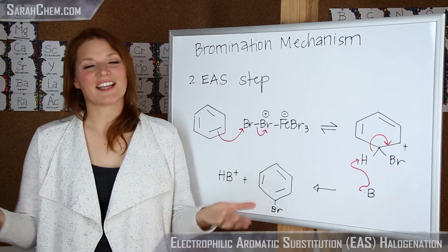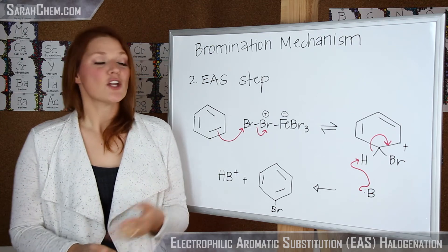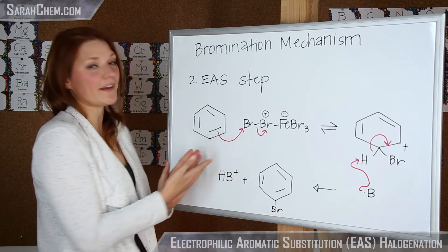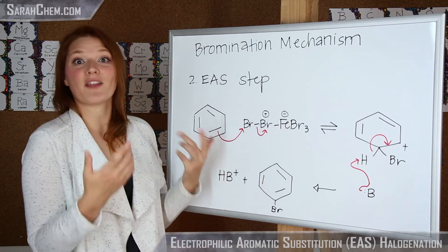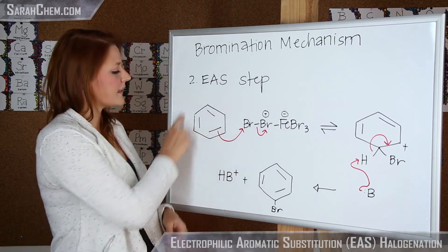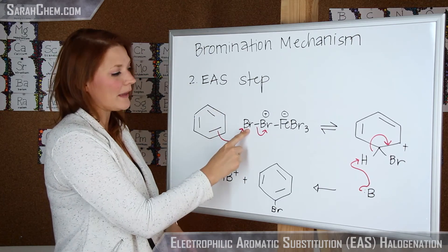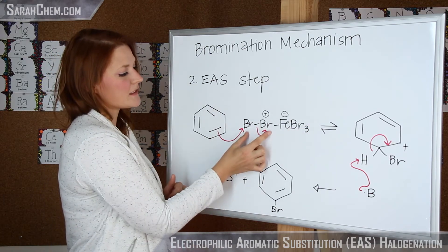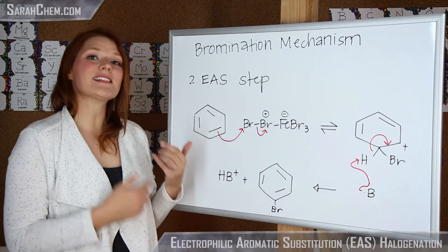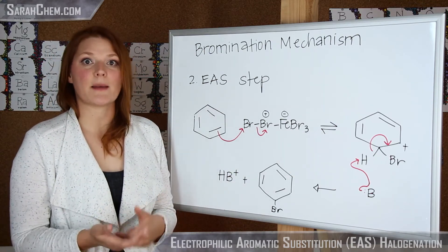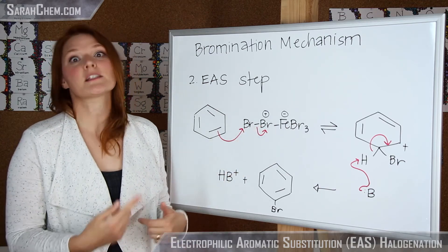So now we're ready for the second step — the electrophilic aromatic substitution part of this mechanism. We're going to take our aromatic compound, in this case benzene, and react it with the electrophile that we just made. The benzene is going to come and attack the bromine, kicking off the rest of the group because of that weakened bond. This is going to be in equilibrium because benzene is losing aromaticity in this step — it's not particularly favorable — but because we've made such a good electrophile, it is possible.